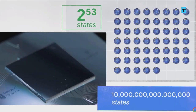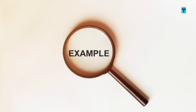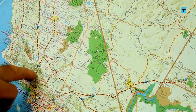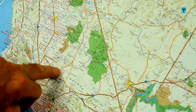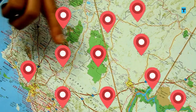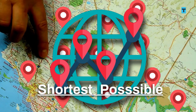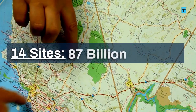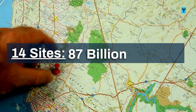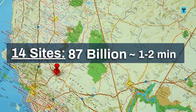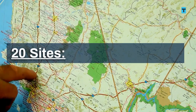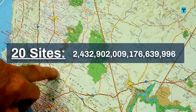So how does all of this come to practice? Consider this scenario: you are going on a hike and planning to visit different sites like waterfalls and springs, and you want to find the shortest route to visit them all. If you visit 14 sites, you have 87 billion possible combinations — an average computer might take a minute or two to solve this. But if we increase it to 20 sites, we get a monstrous number of possible routes.